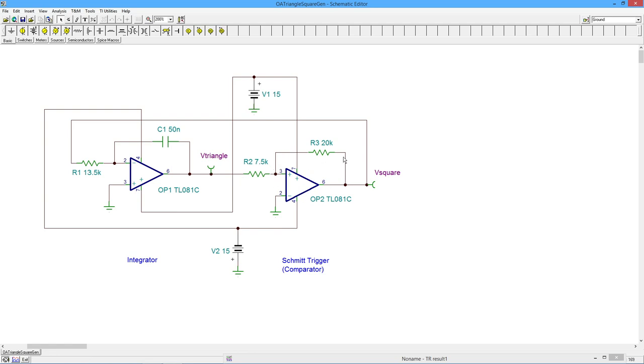This then feeds a Schmitt trigger, a comparator. Now you might look at this quick and think this is an inverting amplifier, but notice the input is coming in on the plus input. So this is a comparator, Schmitt trigger. Basically the ratio of these two resistors, R2 and R3, is going to wind up setting the positive and negative trigger values. And the output of this, because it is a comparator, is a square wave.